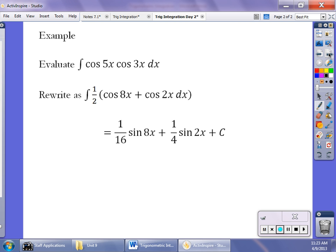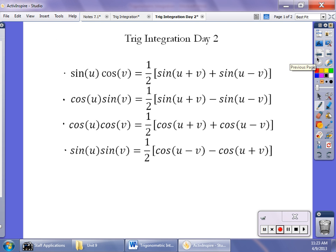Now let's look at one example. If I have something like the cosine of 5x cosine of 3x, that is most like this one right here. So what I did was cosine of 5x cosine of 3x.